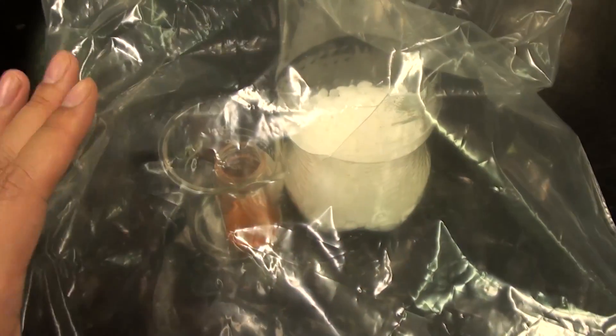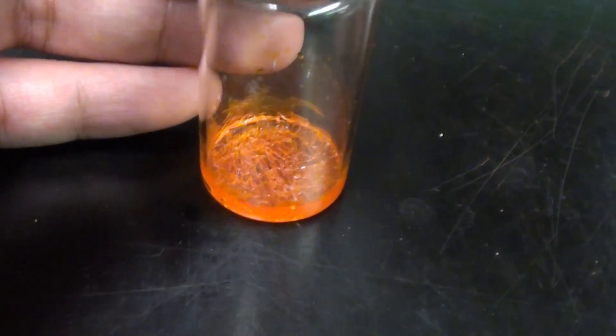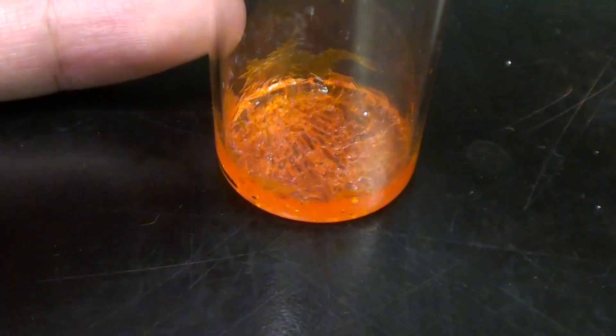Leaving it for a few weeks in a desiccator bag, we can dry it and produce the solidified form of chloro-auric acid. Thanks for watching!